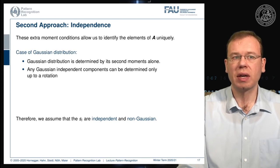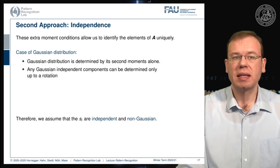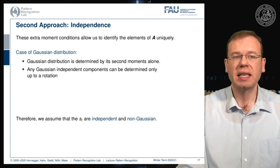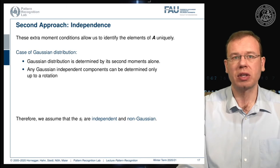In the case of a Gaussian distribution this is not the case, because it is determined by its second moments alone. If you have the mean and the covariance matrix, you have already fully determined the Gaussian distribution. So any Gaussian independent components can be determined only up to a rotation.